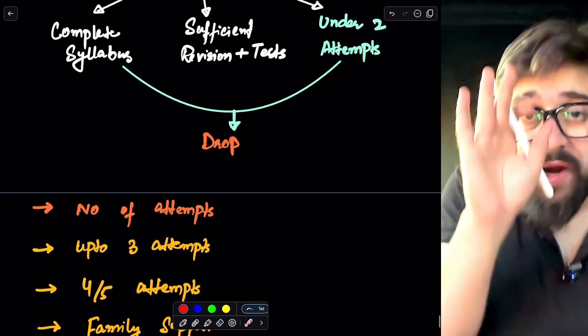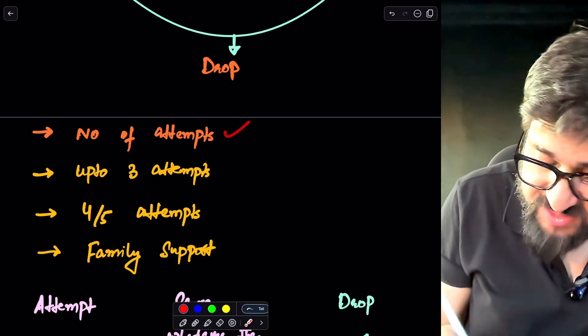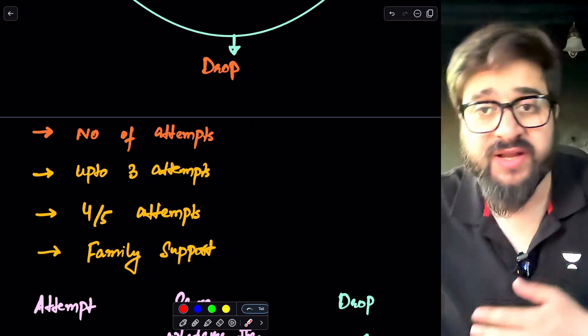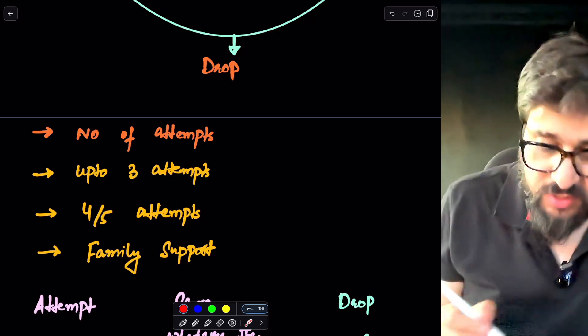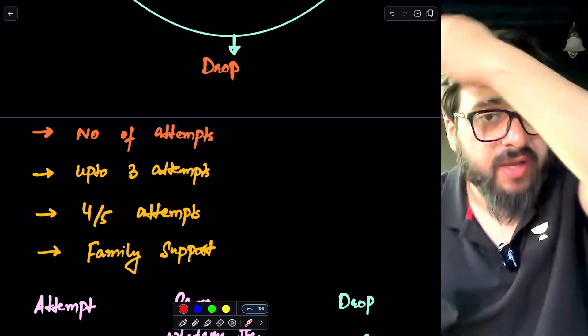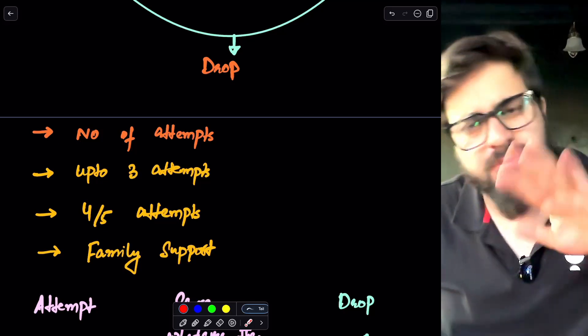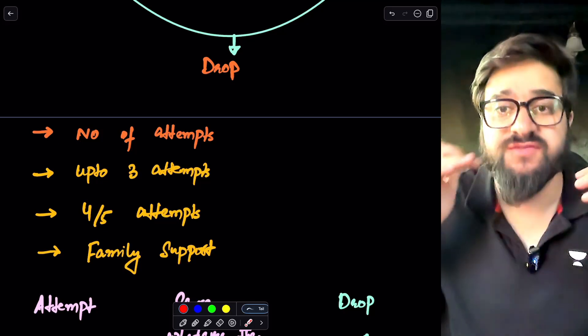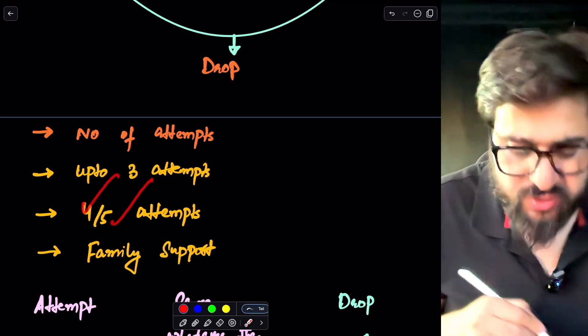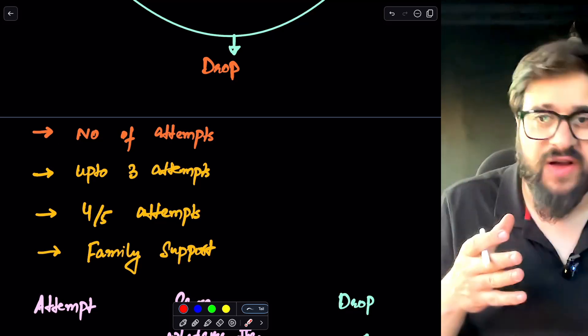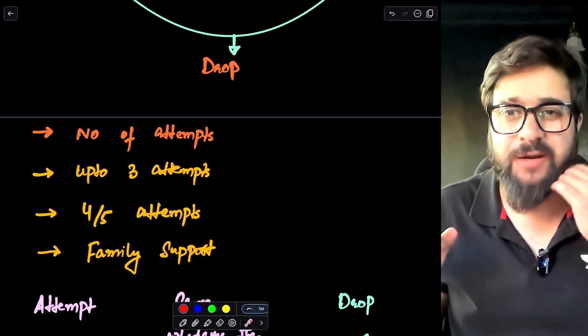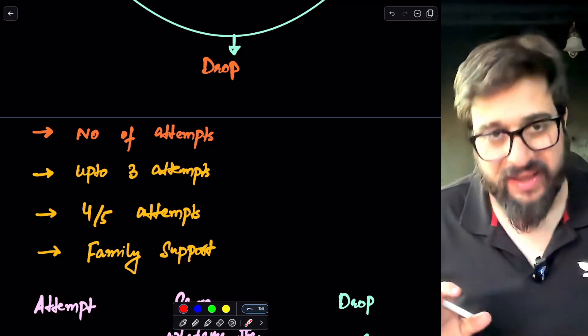Now, what are the things that you need to basically keep in your mind? Number of attempts. So you have to basically see how many number of attempts you have given and accordingly you will have to take the drop. Up to three attempts, I would recommend you guys to basically take a drop. If you have basically taken two attempts, then you should go for the one more attempt, but there are some things which you need. There is a criteria which you need. If you have got the fourth and fifth attempt, you are not able to basically still qualify, you are not still able to crack this NEET. I should recommend you at that point of time, you should leave this and focus on something else.